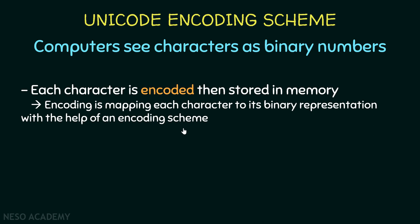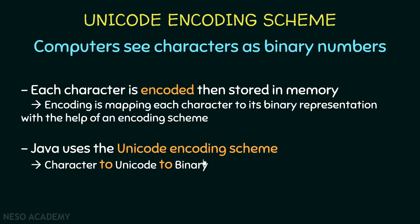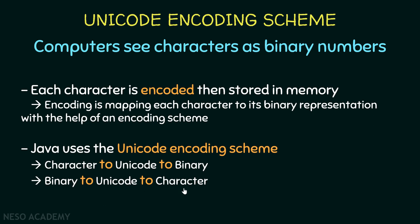In order to store characters inside the computer, we use what's called an encoding scheme. Java uses the Unicode encoding scheme. So a character will be converted to its Unicode representation, and after that it will be stored inside the computer in binary format. Likewise, a binary format will be converted to Unicode, and then we use that Unicode to know what the character is. Everything will be clear when we see some examples.